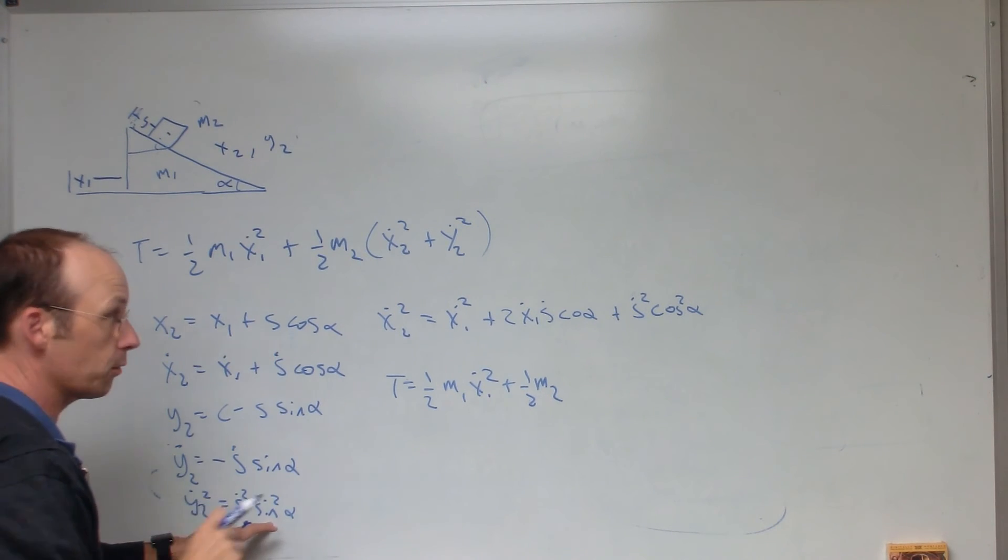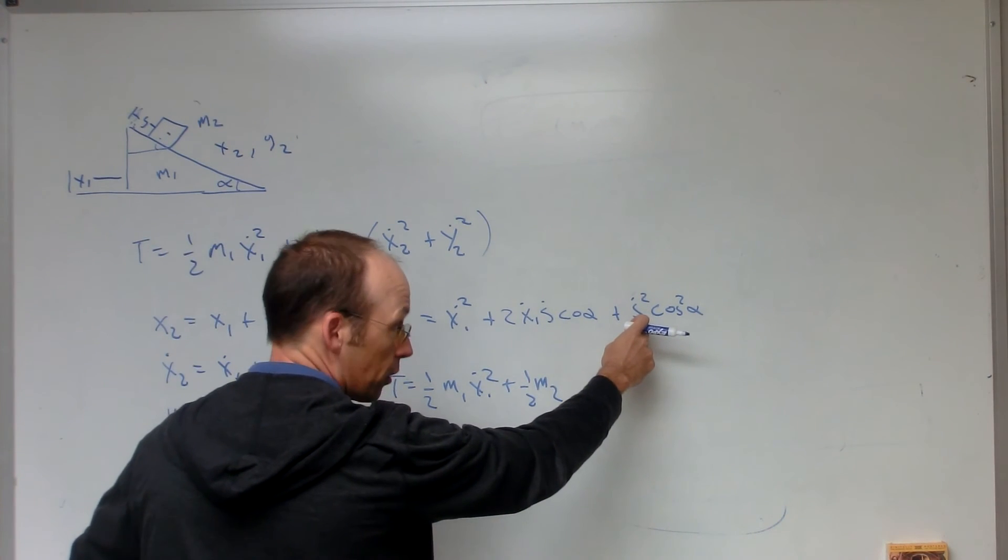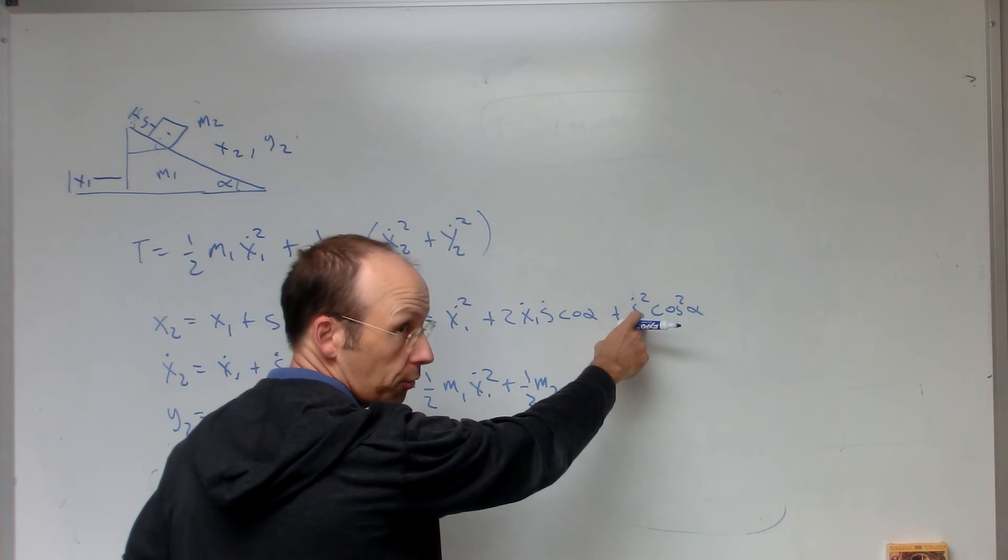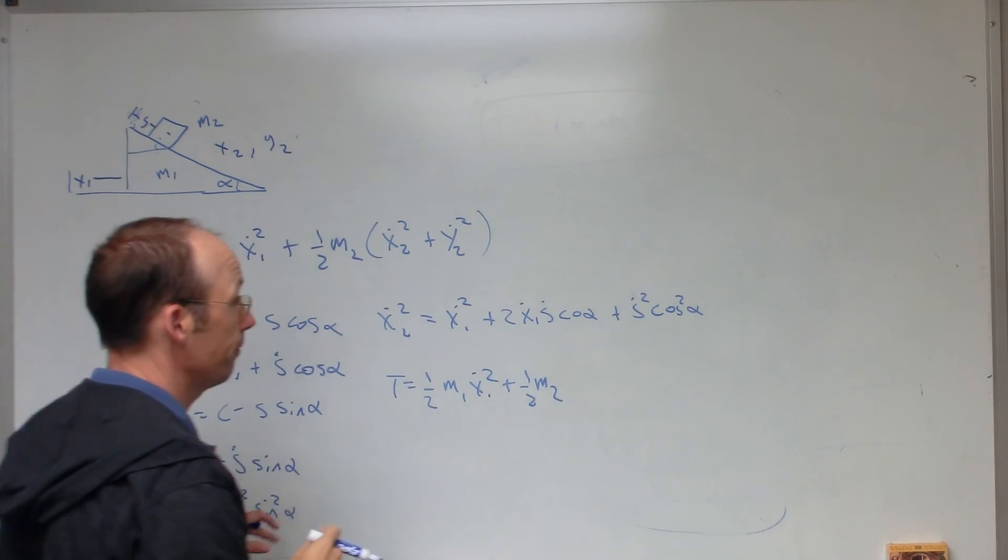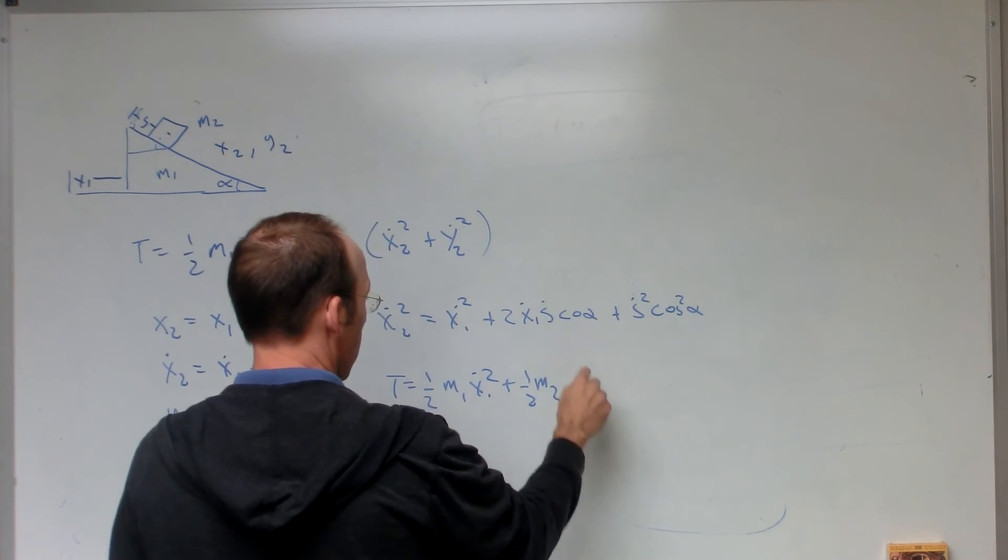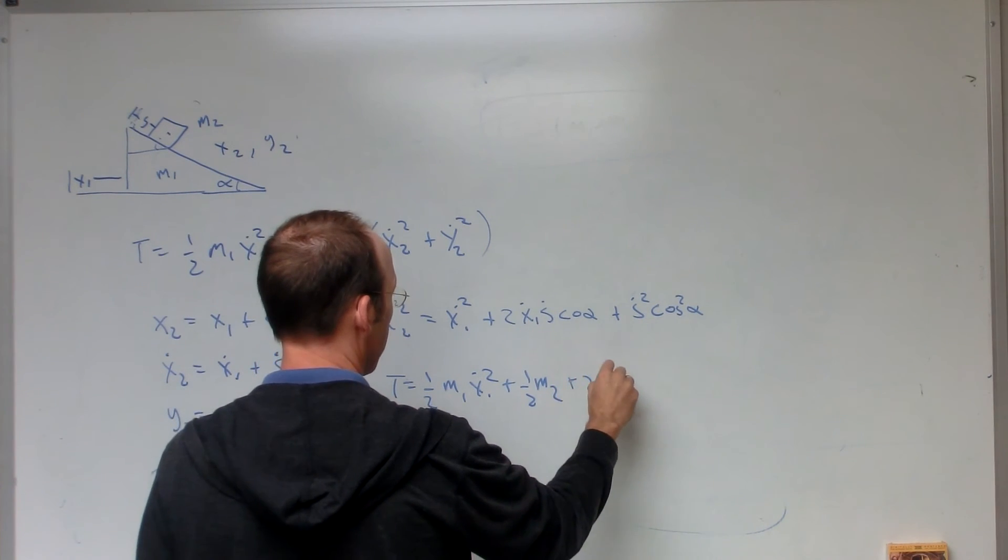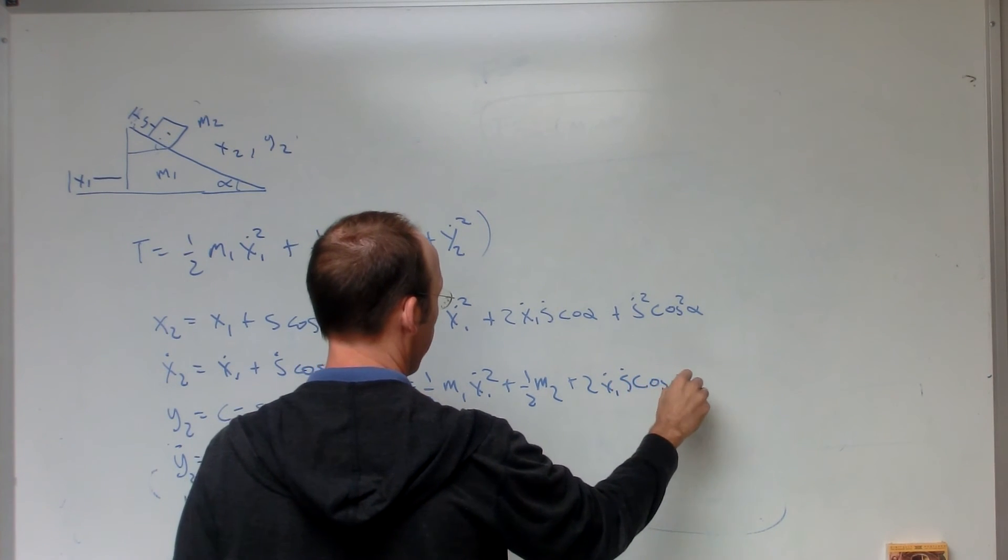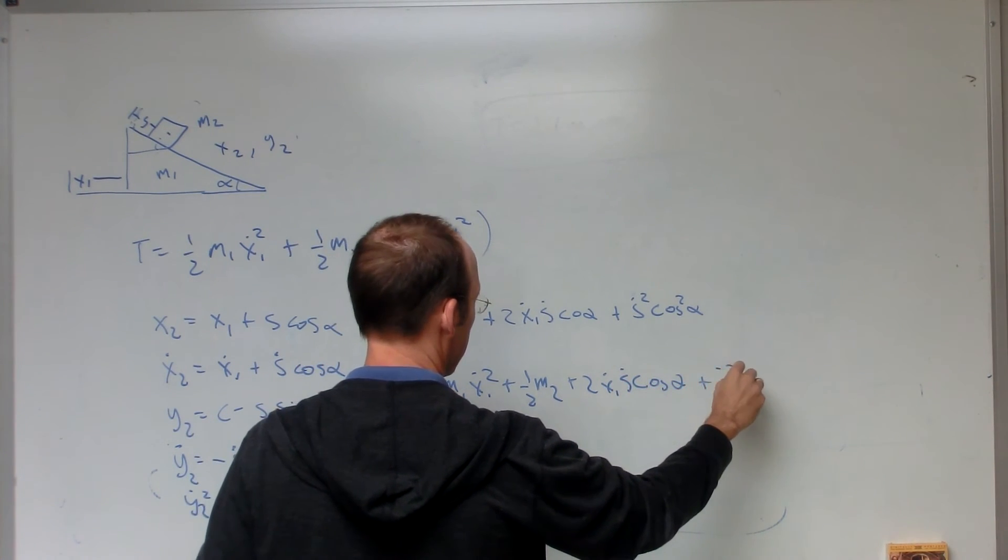I have s dot squared, sine squared alpha, s dot squared, cosine squared alpha. That's just s dot squared, because cosine squared plus sine squared is one. So I'm taking that shortcut. Plus two x1 dot, s dot, cosine alpha plus s dot squared.